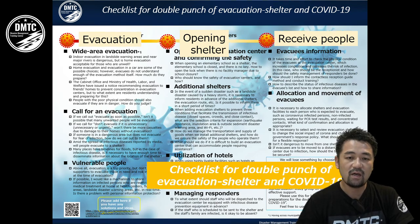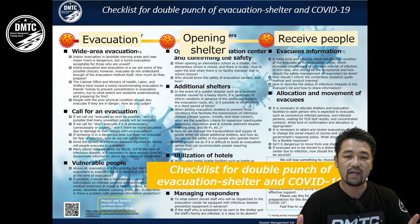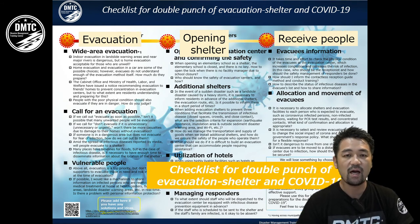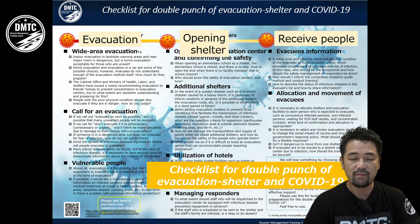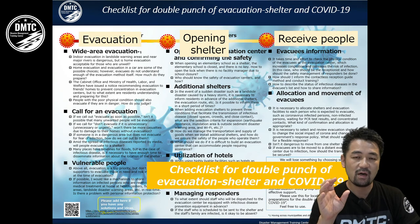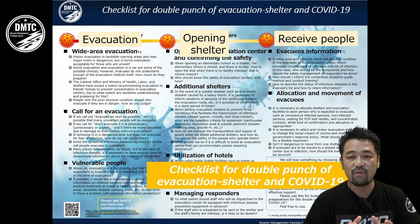Now we have to think about the double punch of evacuation and shelter management combined with COVID-19. We created a checklist addressing: how to manage wide-area evacuation, how to communicate evacuation orders to the public, how to take care of vulnerable people, and how to manage the opening of shelters. This first opening phase is one of the most important points.